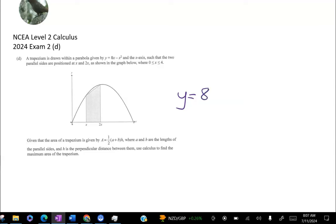So we're given a trapezium sitting just inside a parabola. The parabola equation is 8x minus x squared. And we've got the x-axis along here. And two parallel sides of the trapezium.